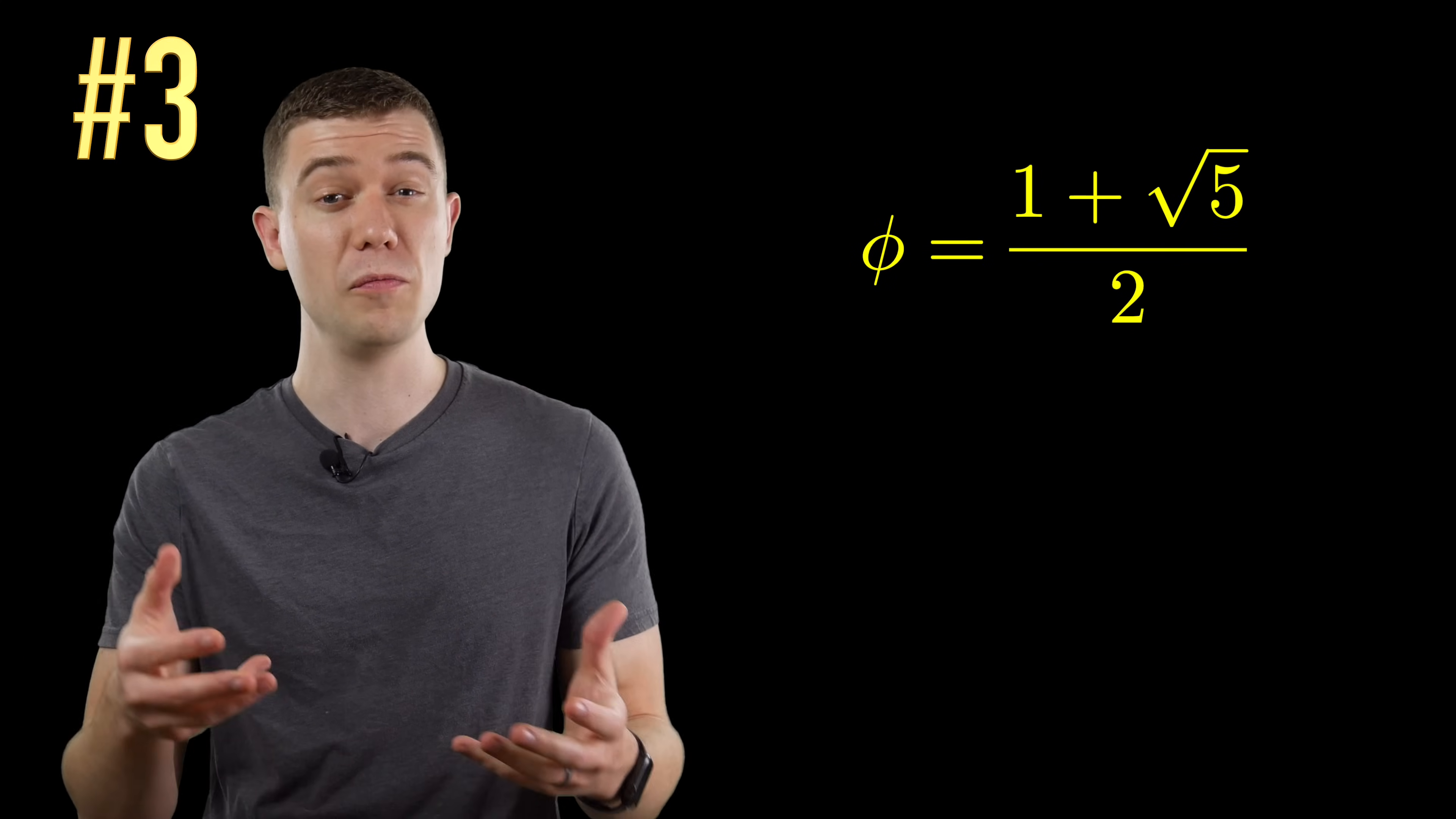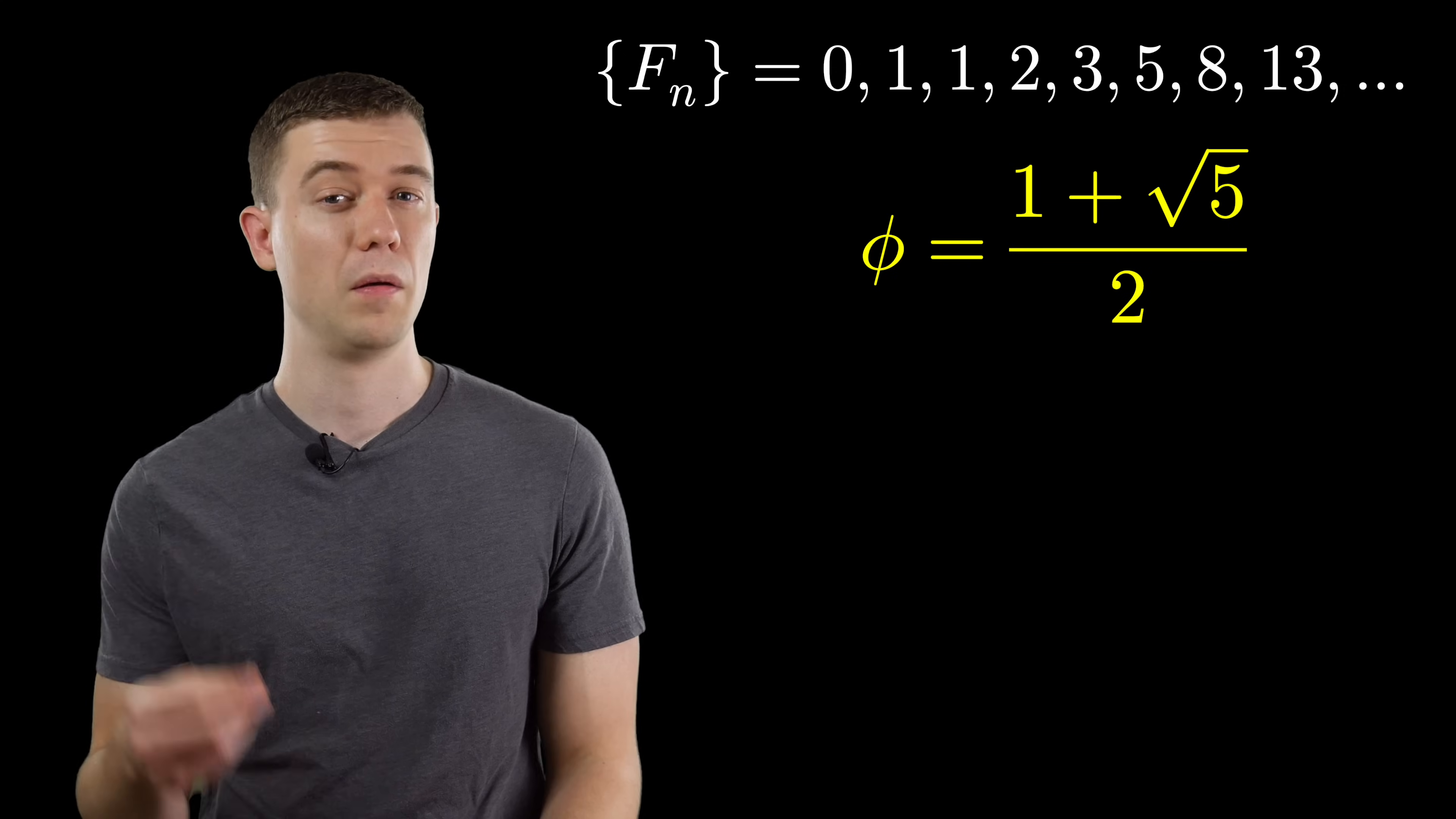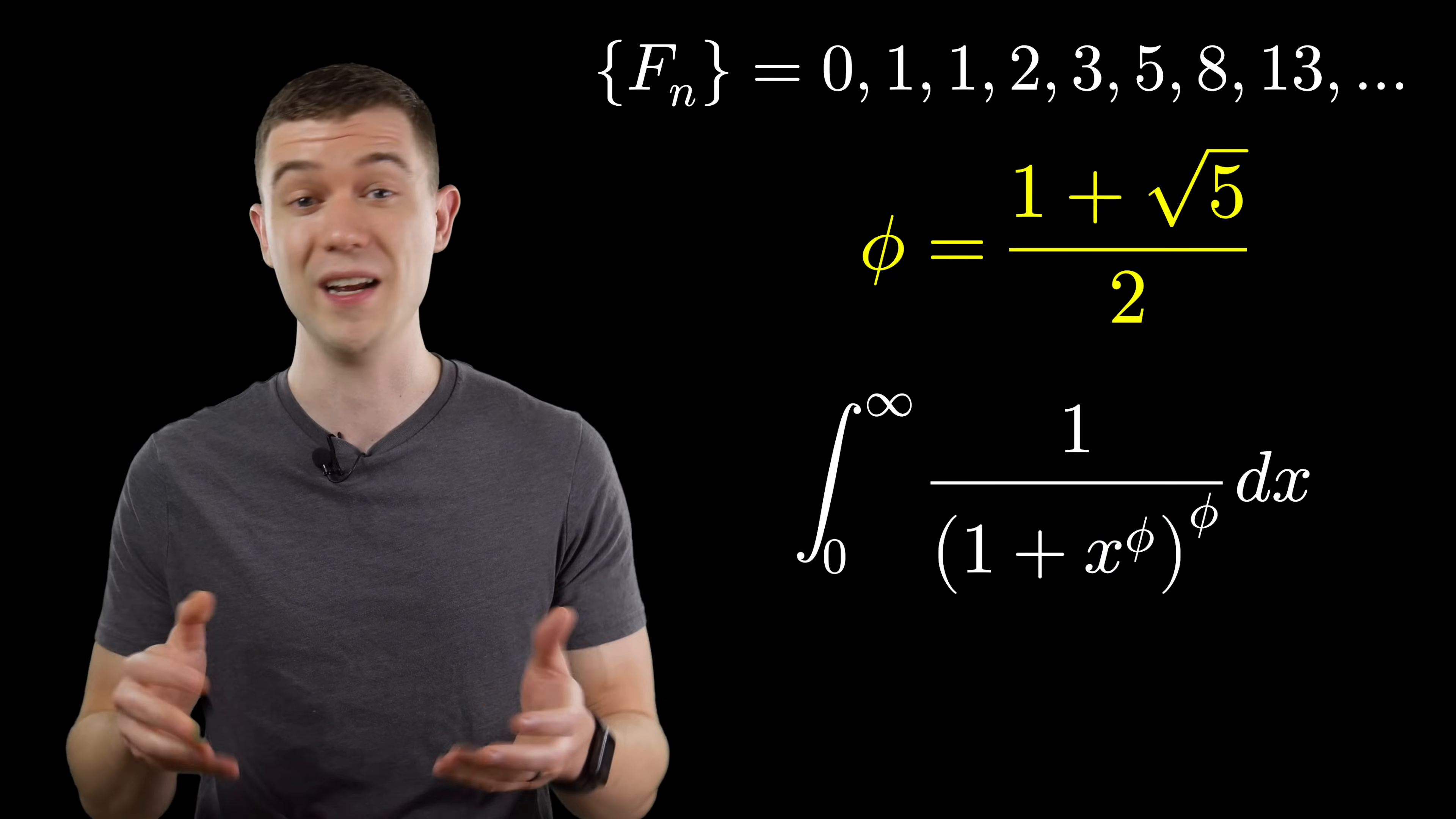Do you know the golden ratio given by the Fibonacci sequence? It's 1 plus root 5 over 2. It shows up all over nature and has great properties in and of itself. But what I want to talk about, I'm going to dub this golden integral. And wouldn't you believe it, putting that golden ratio in those two places of this function and integrating gives us 1.